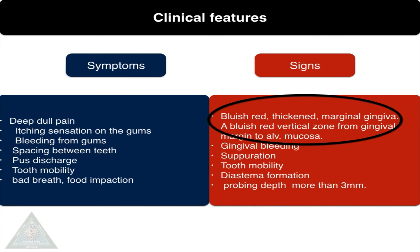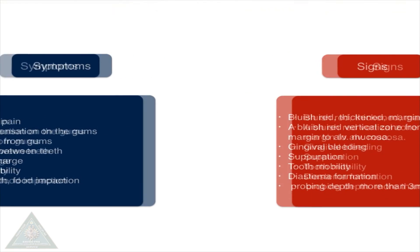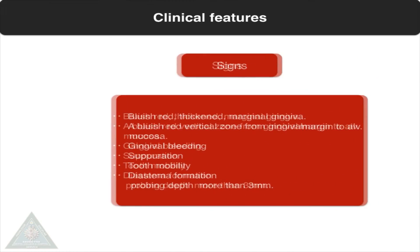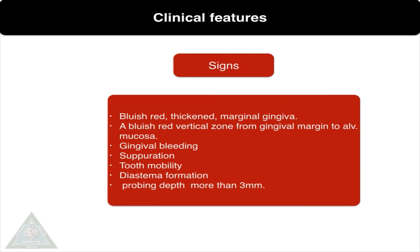The clinical signs we can observe are a bluish-red thickened marginal gingiva, or a bluish-red vertical zone extending towards the alveolar mucosa. You can also see gingival bleeding, separation, tooth mobility, and diastema formation. Confirmation is by probing, where you can see a probing depth of more than three millimeters.